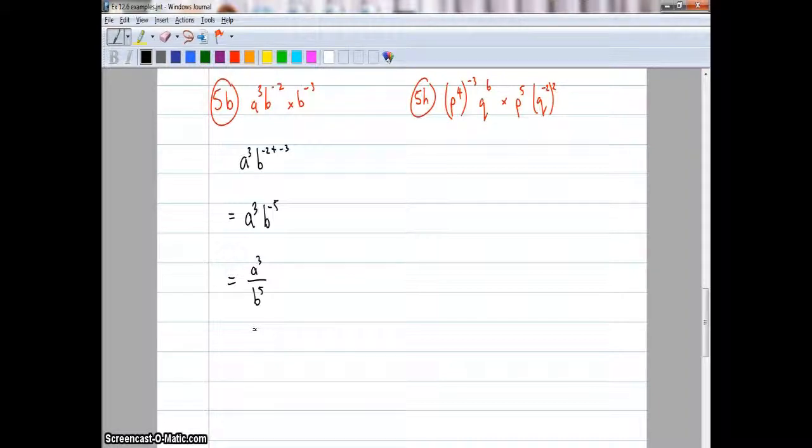This next one's a little bit trickier though. Question 5H, I'm going to first of all expand the brackets, so this becomes p negative 12, because the numbers are multiplied, by q6 multiplied by p5 q negative 4. Now I'm going to add all the powers together because they're all multiplied, the bases are multiplied. That becomes p negative 7 multiplied by q6 plus minus 4 is 2. Hopefully I didn't do too many steps in my head. That now becomes q2 over p7. So we dropped it and made it positive.